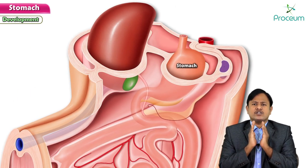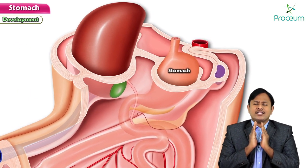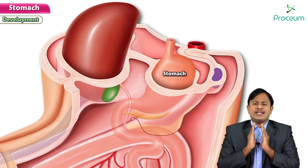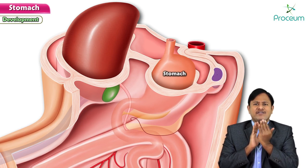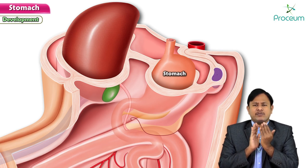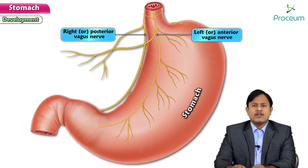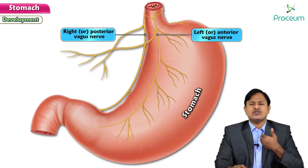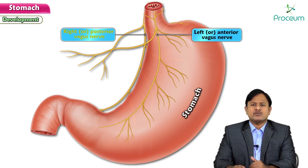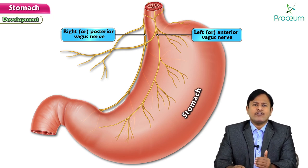The significance of this rotation is that all structures present anteriorly are mainly from the left side, and posterior structures are mainly from the right side. Most importantly, the left vagus running through the thorax becomes the anterior vagus, and the right vagus becomes the posterior vagus. This is of prime importance while performing vagotomy.